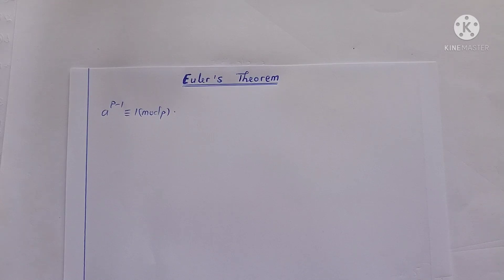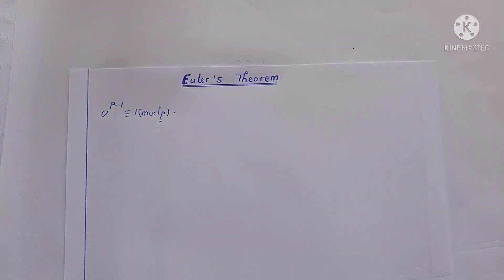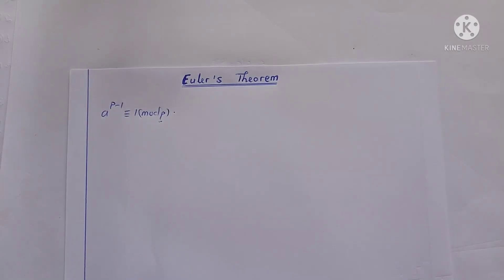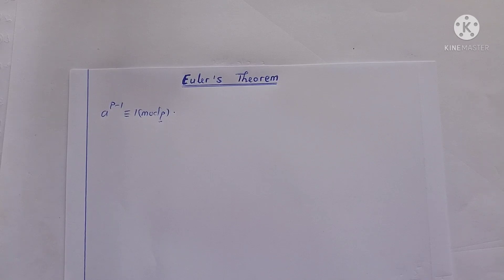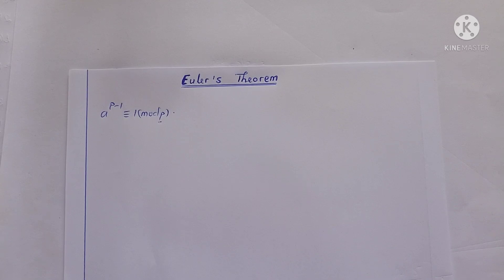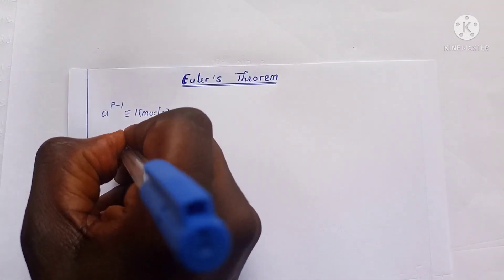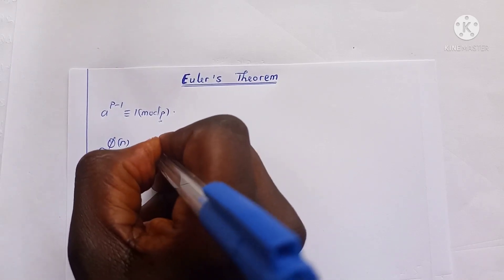With Euler's theorem, the conditions are different. p is not restricted to prime numbers — it can be any positive integer. Secondly, a and p must be co-prime, meaning the GCD of a and p must be 1. Euler's theorem states that if a and n are two integers co-prime to each other, then a raised to the power phi of n must be congruent to 1 mod n.